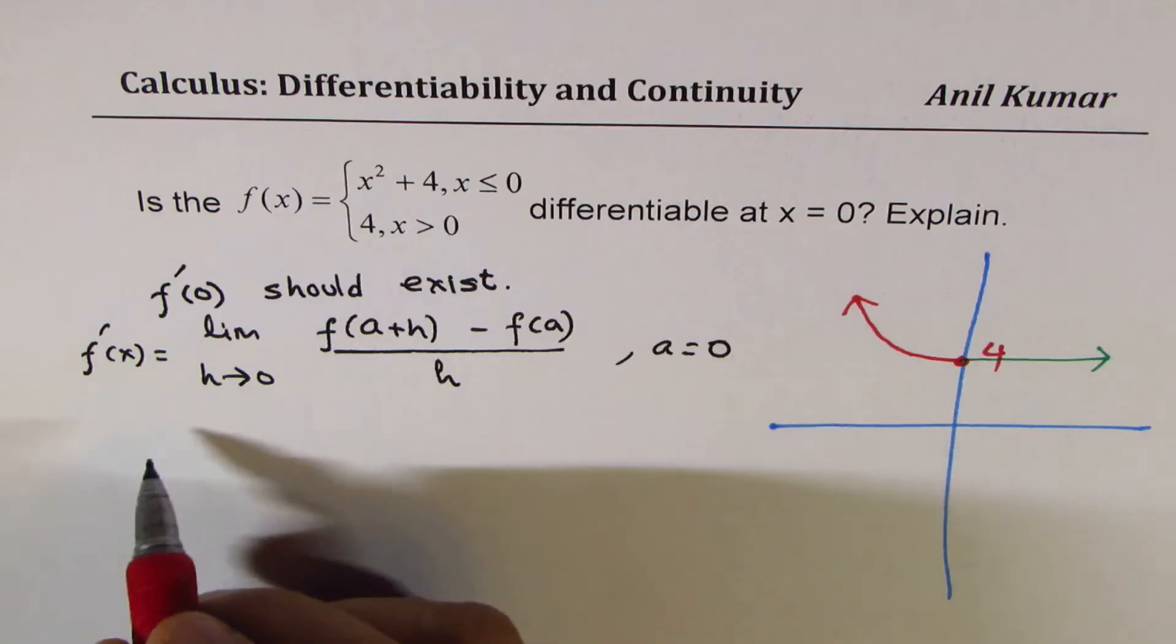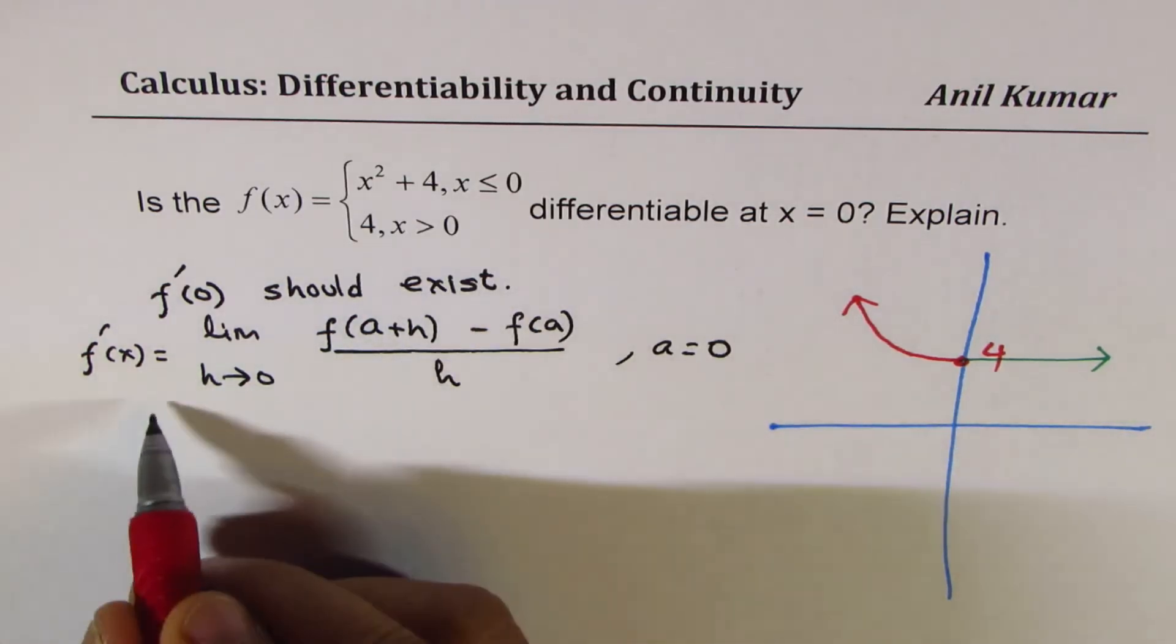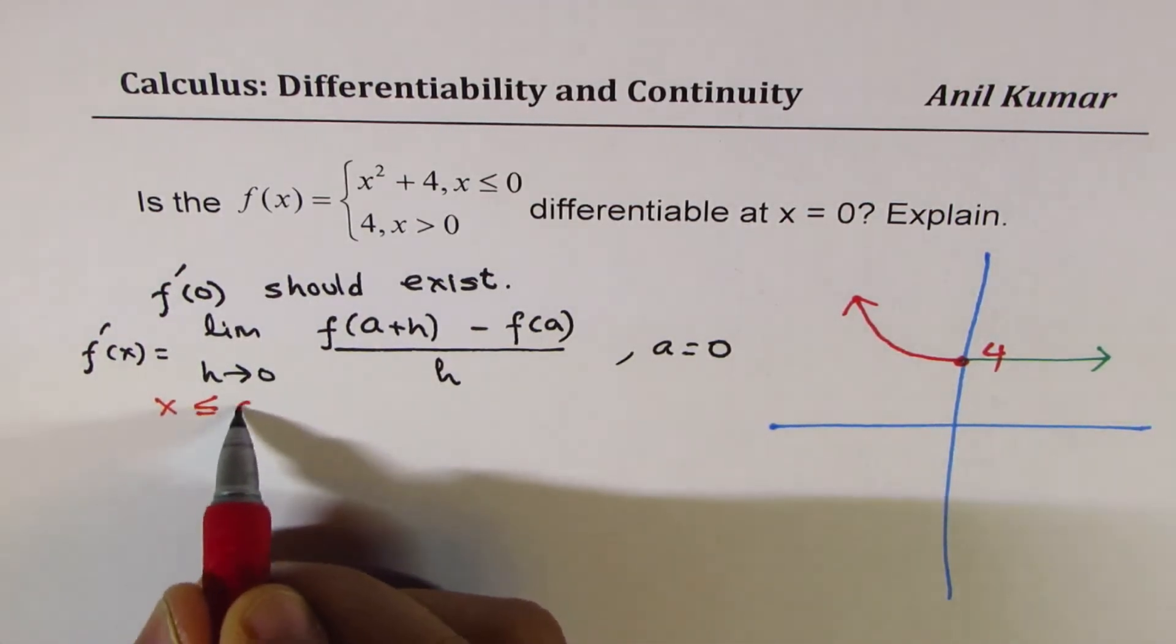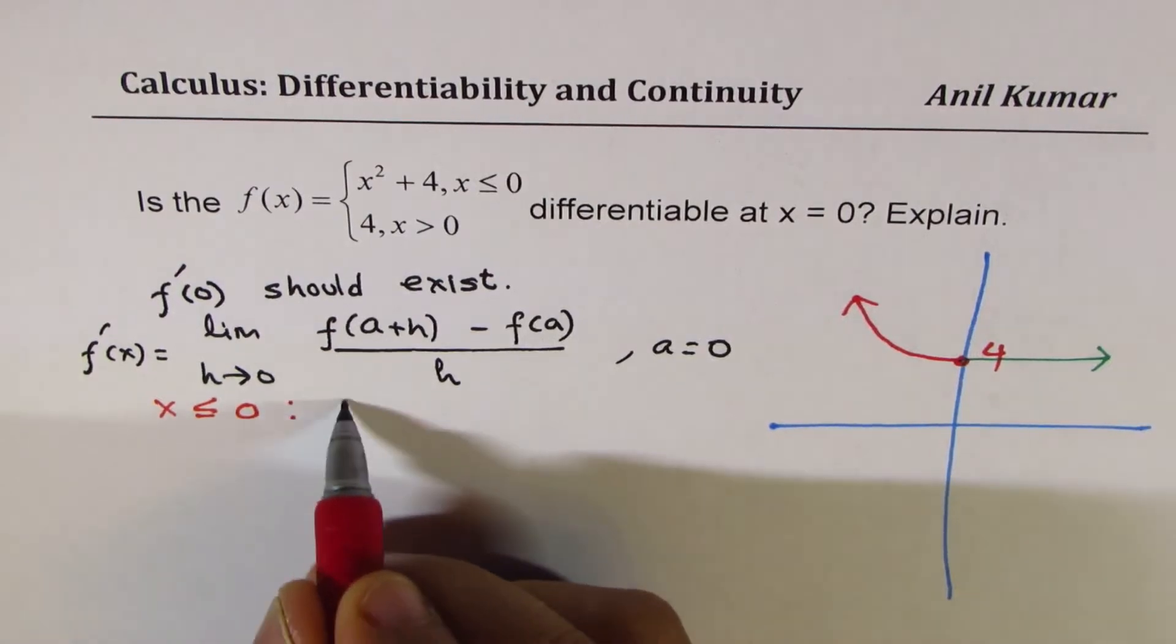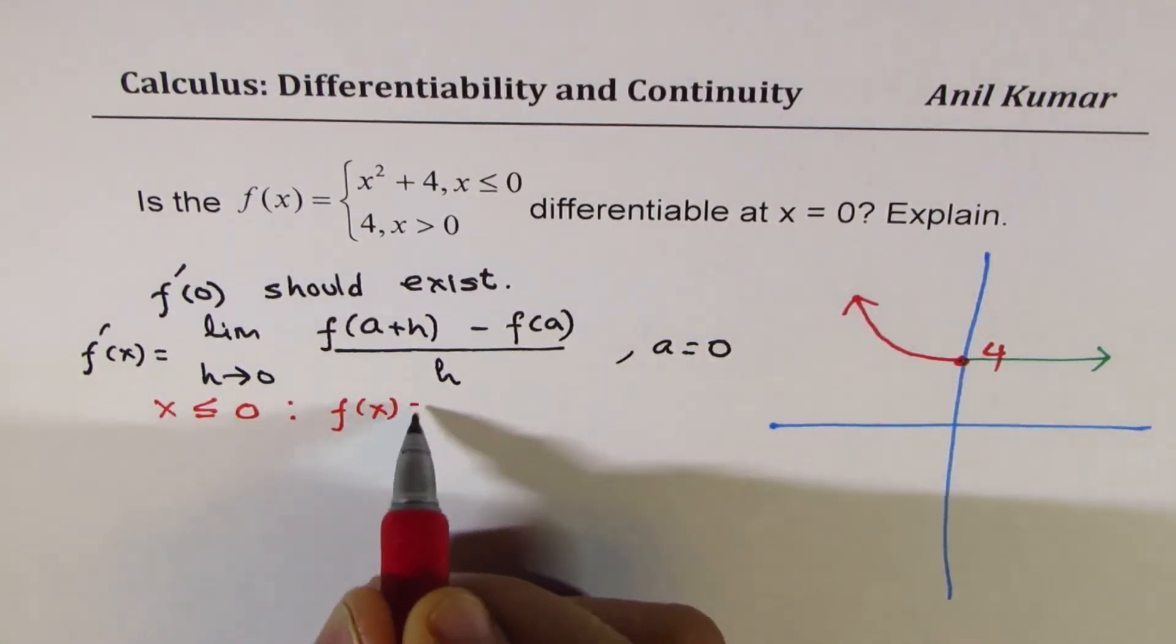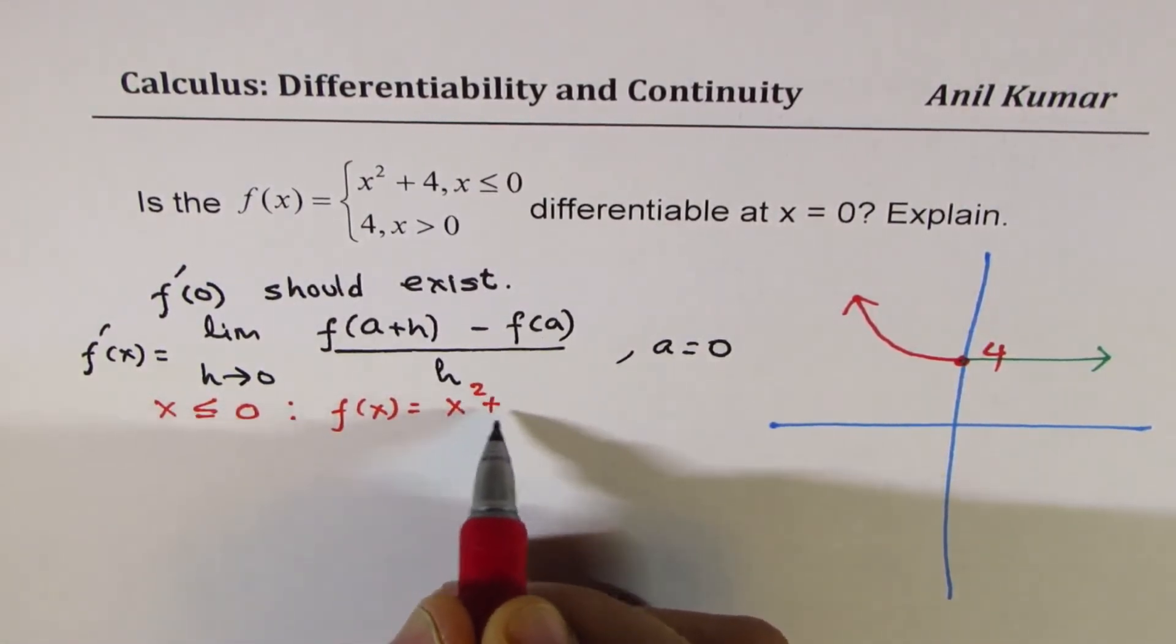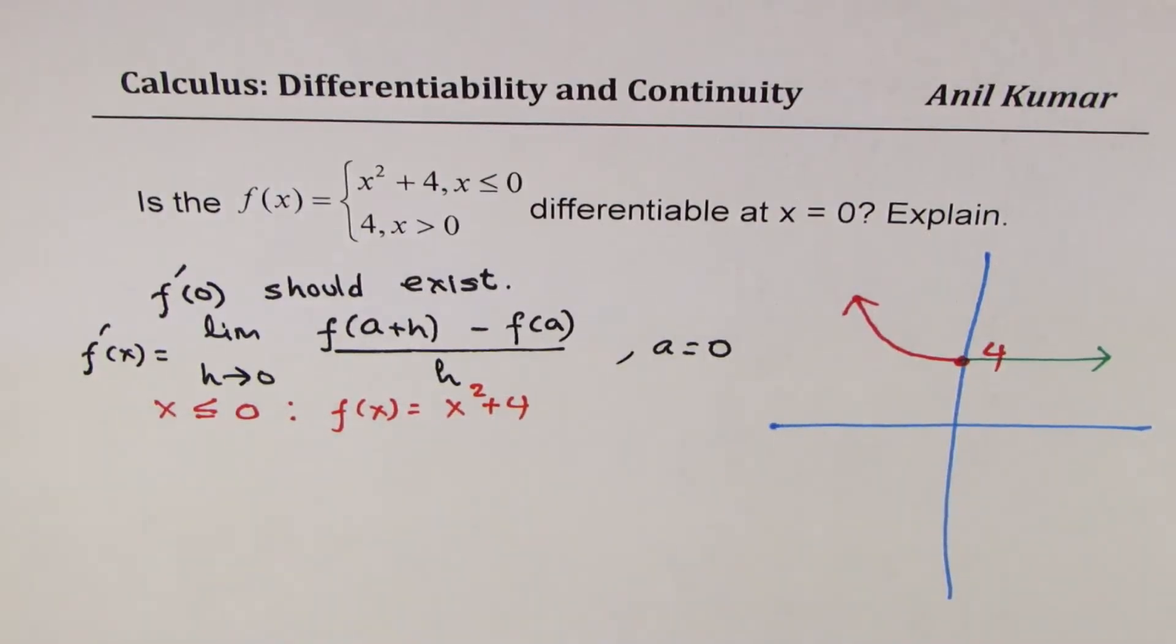Left side when x is less than or equal to 0. At that time, f(x) is equal to x² + 4, correct? So we'll find this left side limit.